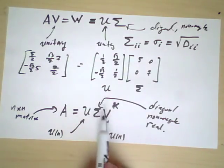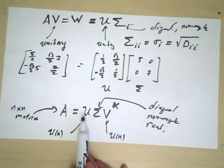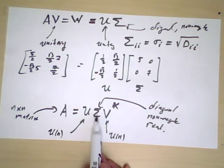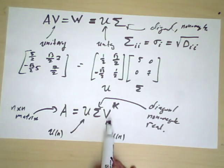In which case U would be m by m, V would be n by n, and sigma would be a rectangular matrix of size m by n, which essentially blocks out the component of either the domain or the codomain as appropriate.